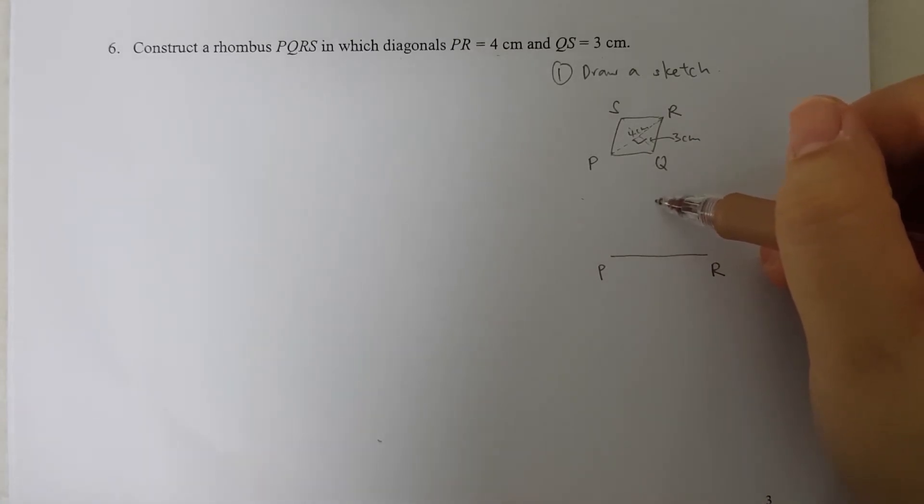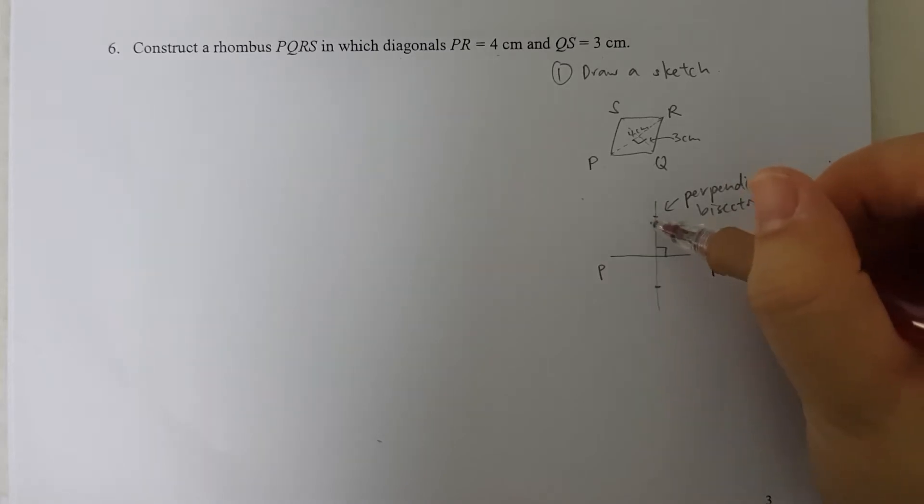So if I have the line segment PR which is 4 cm and I were to actually draw the perpendicular bisector of PR, and if I go to label it—so I will mark it up as 3 cm.